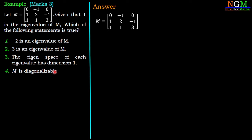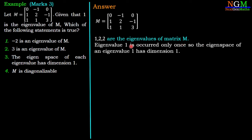For the next two options we need the eigenvectors of M. Eigenvalue 1 occurs only once, so there is only one eigenvector associated with eigenvalue 1. Therefore the eigenspace of eigenvalue 1 has dimension 1, since it contains only one independent eigenvector.